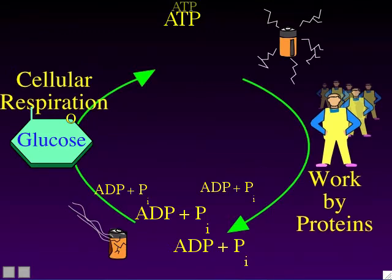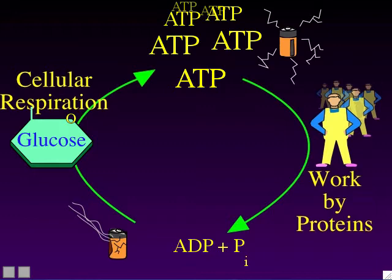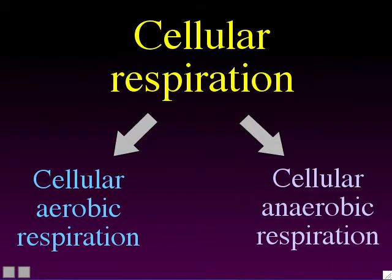The cell's process of recharging its ATP supply is called cellular respiration. Just like charging a dead battery requires energy, cellular respiration needs an energy source — and that energy source is glucose. Cells take in glucose sugar and use its energy to recharge their ATP supply. As it turns out, there are two types of cellular respiration: cellular aerobic respiration and cellular anaerobic respiration. Both involve the cell getting energy out of glucose to recharge ATP, but they are two different styles.